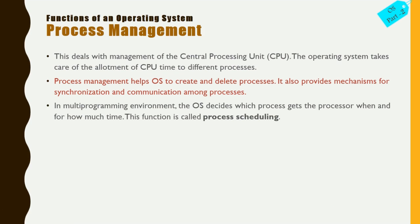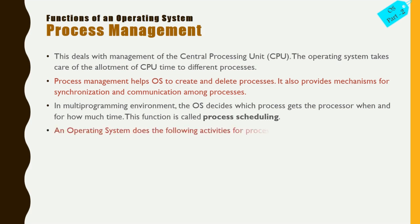In a multi-processing environment, the operating system decides which process gets the processor, when, and how much time. This function is called process scheduling. There are different process scheduling algorithms — such as First Come First Serve and Shortest Job First — and you will learn more about these in higher classes.